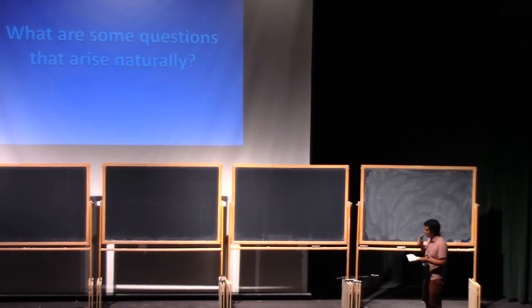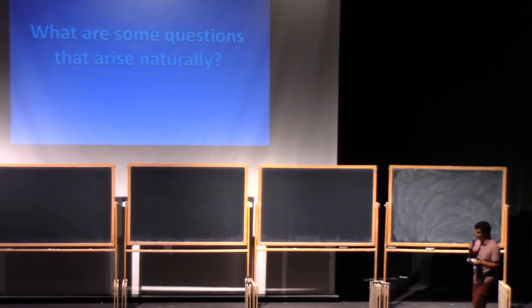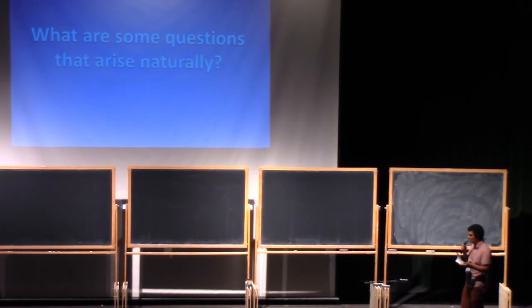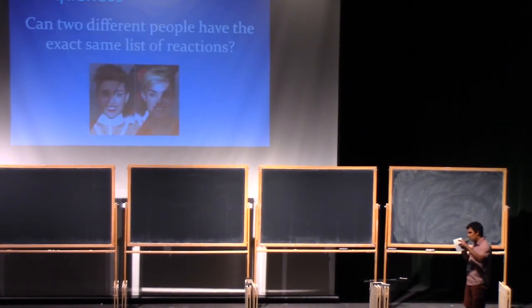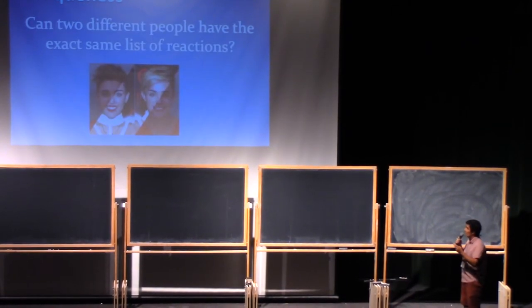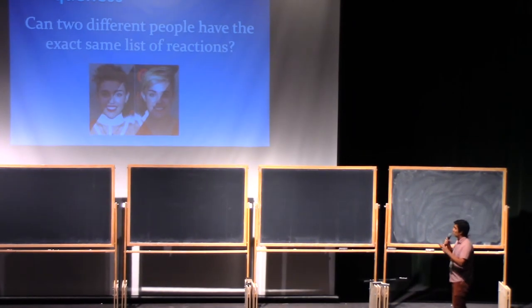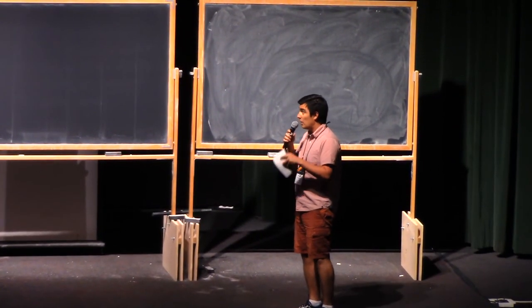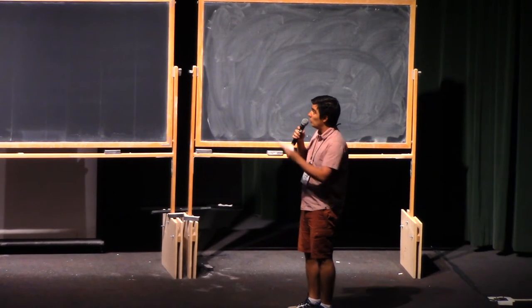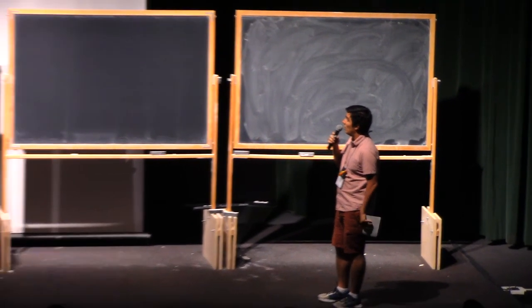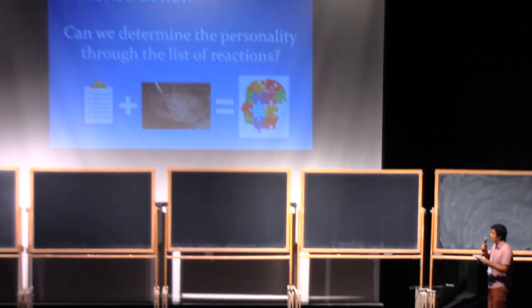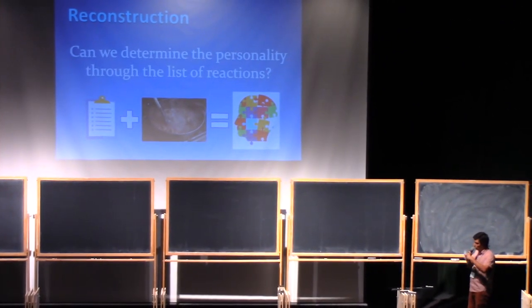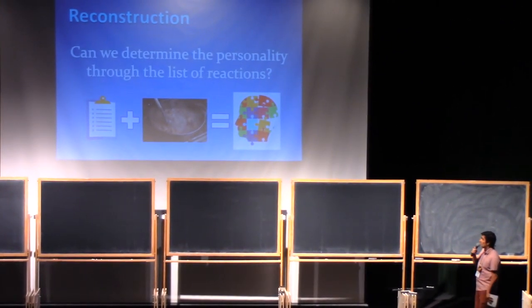The first question we could possibly ask is the question of uniqueness. Can we have a list of reactions to stimuli that can correspond to different people? This is the same as saying if every list corresponds to exactly one possible person. If we get to know this, then we have some hope to ask for the reconstruction problem, which is: can we cook up a recipe to produce the personality based on the list of reactions?